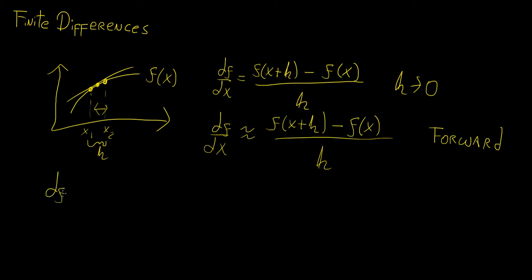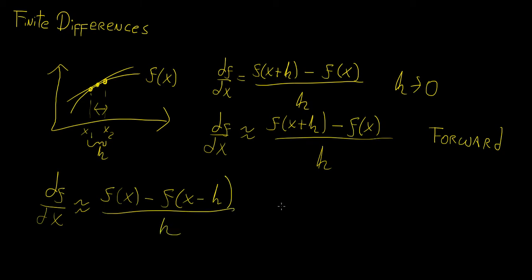There's another way we can express the derivative: by taking a point that comes before the current point. So we can write f of x minus f of x minus h, over h, and this is called a backward difference. This is essentially the same as the forward difference — the accuracy of both is the same. There's really no reason to prefer one over the other; it's just a matter of convention, depending on whether you want to define it in terms of the next or previous value.